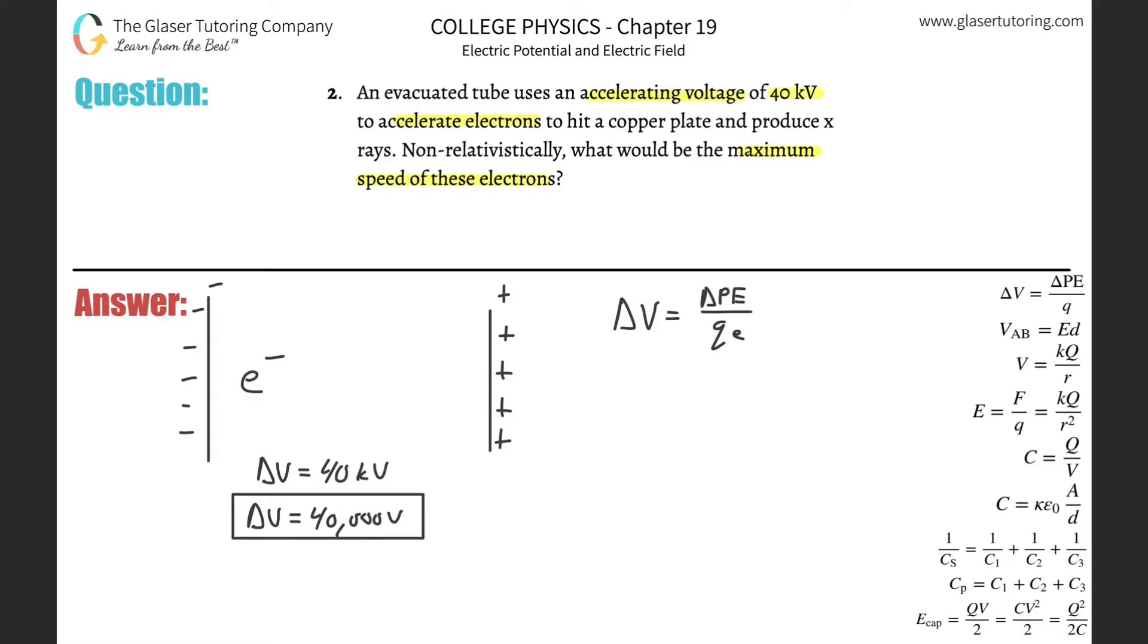Now, basically what I realize is I can plug in then the 40,000 for the voltage difference. Then the change in potential energy is what I'm actually going to solve for. And we actually do know what the charge of the electron is. I should probably memorize this. 1.6 times 10 to the minus 19th coulombs. So, now I realize that the change in potential energy of the electron is going to be, just take out the handy-dandy calculator, 40,000 multiplied by then 1.6 times 10 to the minus 19th. And we get a value of about 6.4 times 10 to the negative 15th, and that's now in terms of joules.